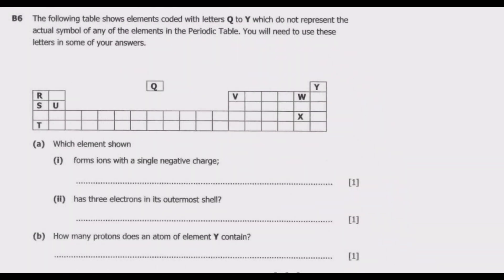Welcome viewers to another episode on AS/A-level chemistry exams. In this episode, we continue looking at the August 2022 Science Paper 2, which is the standard level chemistry. In the previous episode, we looked at question B5, so let us continue from where we ended with question B6.